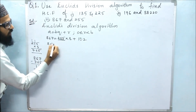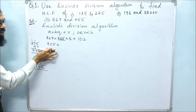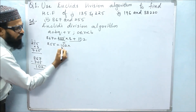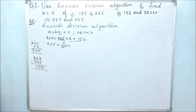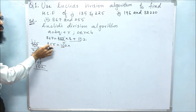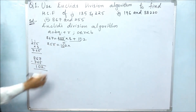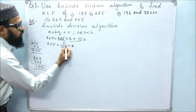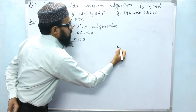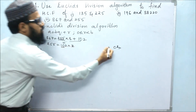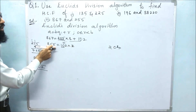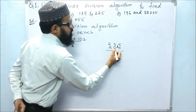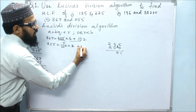Now 255 comes in place of A and 102 comes in place of B. We continue the division with 102. Looking at the first two digits, 10: in the 10 table, the nearest number to 25 is 20, so we multiply 102 by 2. 2 times 2 is 4, 2 times 0 is 0, 2 times 1 is 2, giving 204. Subtracting 255 minus 204: 5 minus 4 is 1, 5 minus 0 is 5, 2 minus 2 is 0. The remainder is 51.